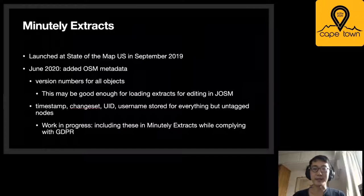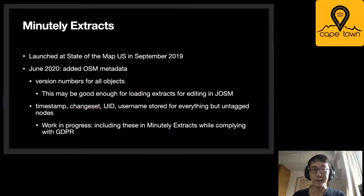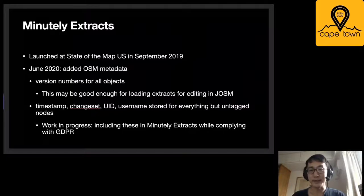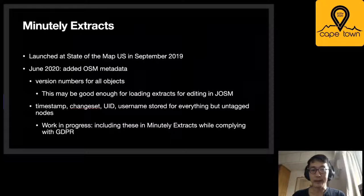For some background on this Minutely Extracts service: I launched it last year, started the map US in September. One feature I added last month is OSM metadata — there are now version numbers for all objects, which might make it good enough for uploads and editing. There's also timestamp change stored in all other fields in the database for everything except untagged nodes. Those untagged nodes are the bulk of the storage space, so this is a space-saving optimization. Some fields like the username are not exposed yet on the Minutely Extracts site. Because of GDPR, I'm working on a system with a login and terms of use in order to make that compliant.